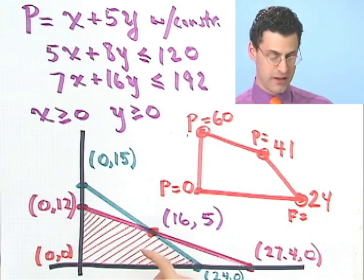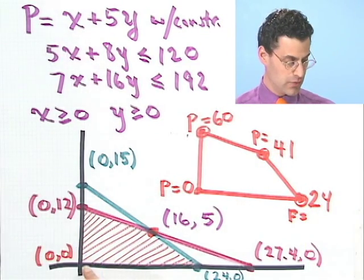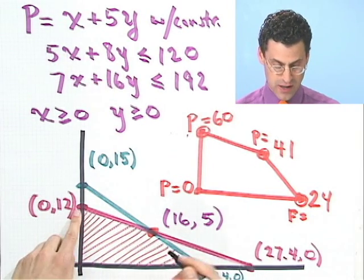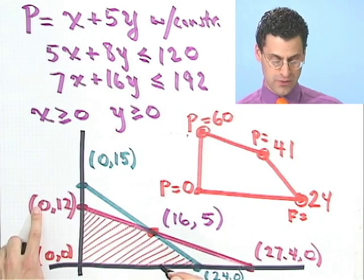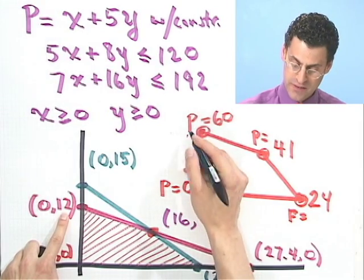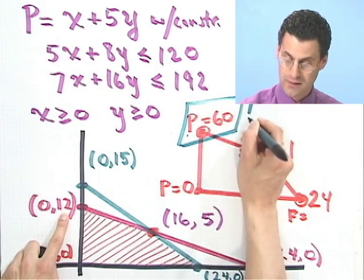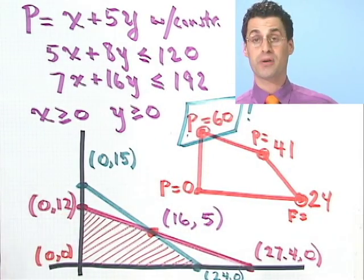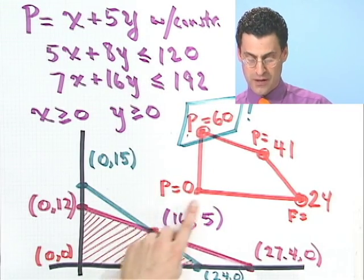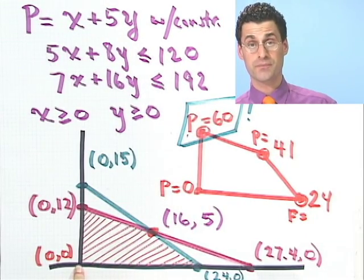So what's the maximum profit we could have given this constraint? Well, it turns out the answer seems to be right here. When x equals 0 and y equals 12, the profit is 60. Whereas the minimum profit, I can get that too, profit is 0 if I have 0, 0.